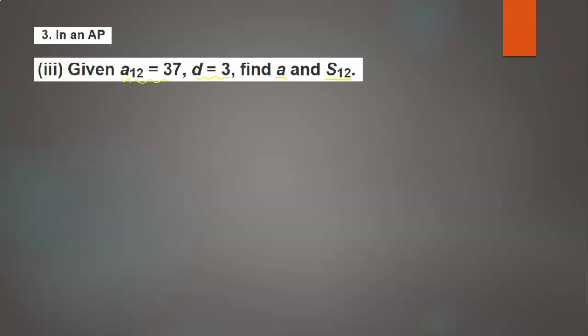First, we're given that a12, the 12th term, is 37, and the common difference is 3. We need to write the formula: an = a + (n-1)d.